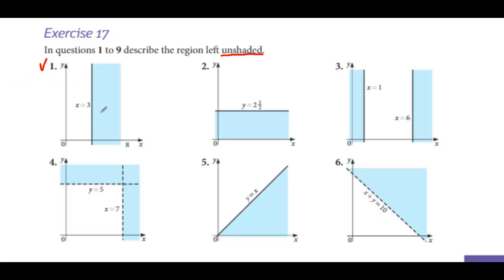Look at the first question. This is the black line, and the equation of this black line is x is equal to 3. We have to see where the unshaded region is. The unshaded region is on the left hand side of the line. So the inequality will be x is less than equal to 3, just looking at the unshaded region.